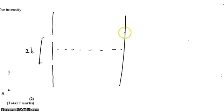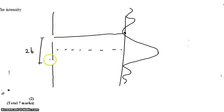And we want to find where the first minimum is going to occur. Well, that's going to come from the path difference just like before.